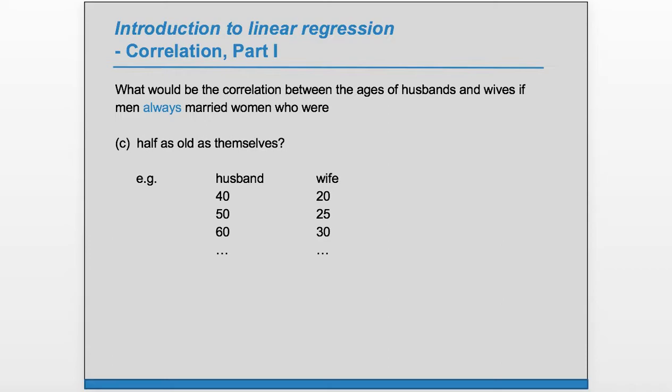If the husband is 40, the wife would be 20, etc. We can still see that as one goes up, the other goes up. And because it is perfect linear relationship with one going up, the other going up, we have r is positive one. They fall along a line with positive slope.